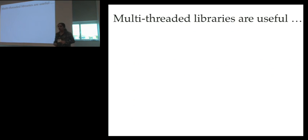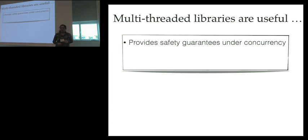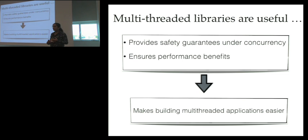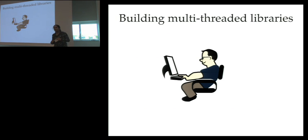Multithreaded libraries are useful for numerous reasons. The two key reasons are these. First, they provide safety guarantees under concurrency and also provide performance benefits and guarantees about them. This implies from the point of view of a third party application developer who is using this library, he need not trouble himself with the intricacies of concurrency or worry whether this library is going to be some sort of a performance bottleneck. While it is amazing to have such libraries, developing such libraries is actually a challenging task.